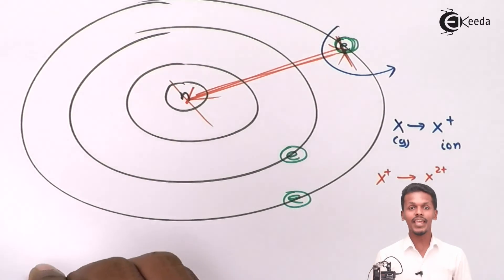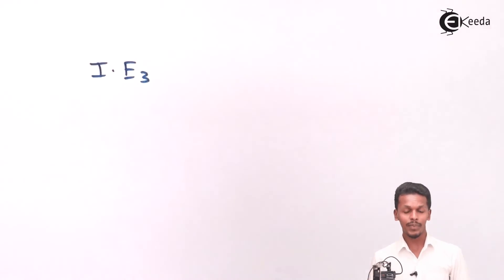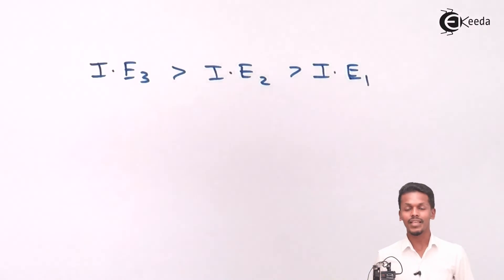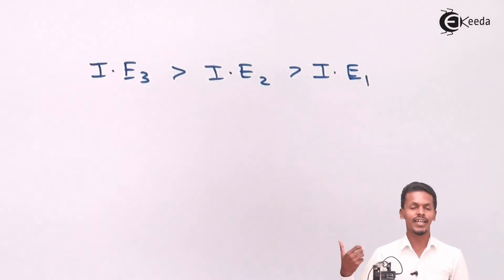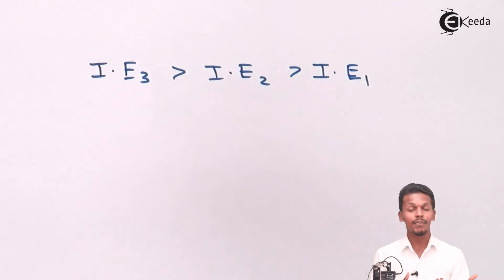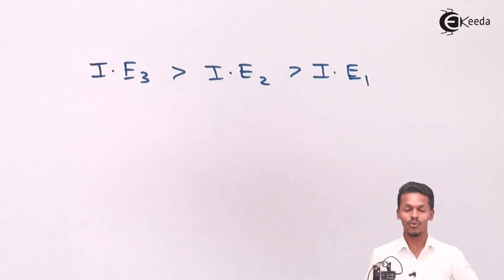This pattern continues: the third ionization enthalpy is always greater than the second, and the second is always greater than the first. This is all related to nuclear charge, atomic size, and the loosely bonded electrons. For the first ionization enthalpy, it is always directed at the loosely bonded electron in the outermost shell. For each successive electron removal, the effective nuclear charge increases, atomic or ionic size decreases, and more energy is required.